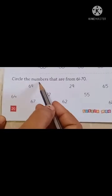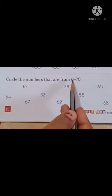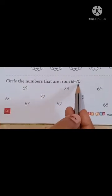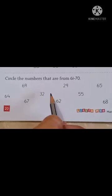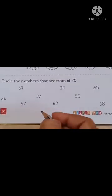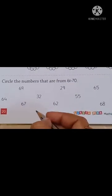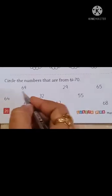Circle the numbers that are from 61 to 70. Baccho, 61 se 70 ke andar jo number hai, usko kya karna hai hamein? Circle karna hai. See.